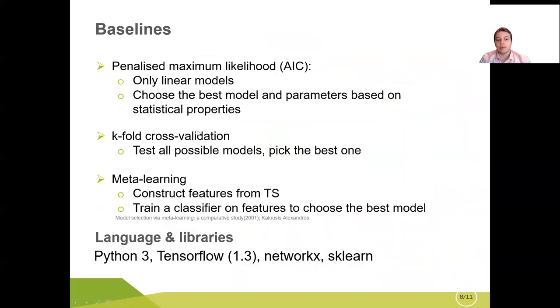To test our model we have used three baselines, three main baselines which are covered in the literature. The first one is penalized maximum likelihood. The disadvantage of this baseline is that we can only test it only on linear models. The next baseline is k-fold cross-validation. We basically test all possible models and pick the best one for each time series. The next is meta learning. We construct features from a given time series and then we train a classifier on those features to choose the best model given new time series with features.